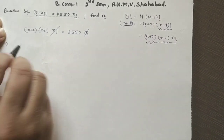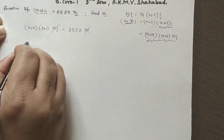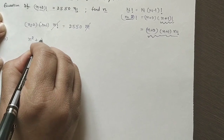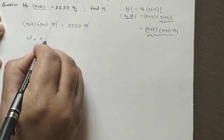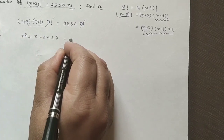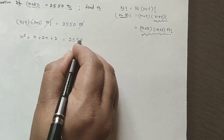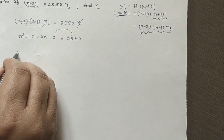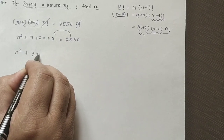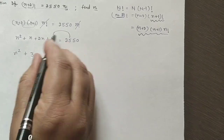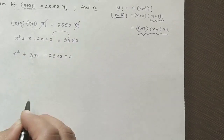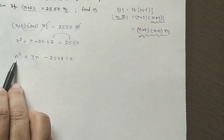We cancel n factorial from both sides since it is never zero. Expanding (n plus 2)(n plus 1) gives n squared plus 3n plus 2 equals 2550. Taking this to the left hand side, we get n squared plus 3n minus 2548 equals 0, a quadratic with two roots to solve.